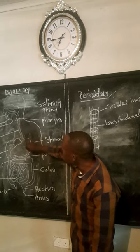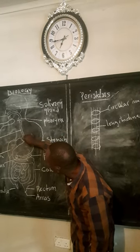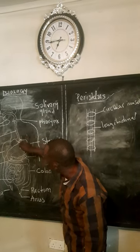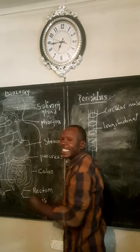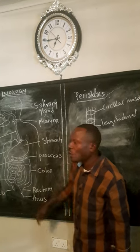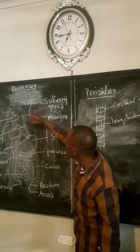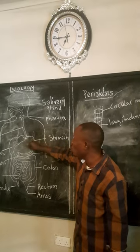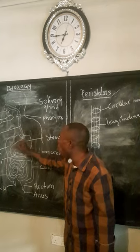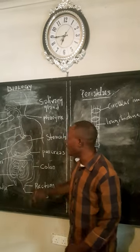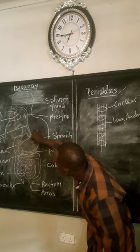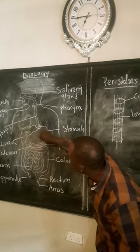Before the bolus gets into the stomach, it has to pass through the cardiac sphincter muscle. The cardiac sphincter muscle is located just at the entrance of the stomach. It controls the intake of food by the stomach — it closes when the stomach is full and opens when the stomach is empty. When the bolus passes through the cardiac sphincter muscle, it will get into the stomach.